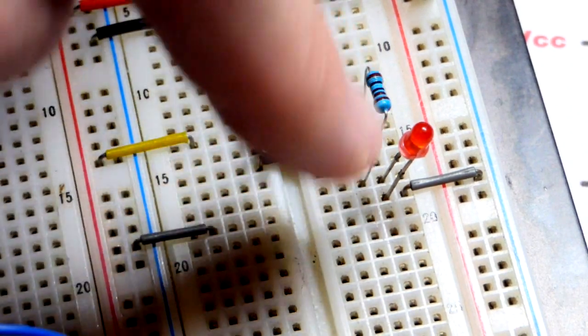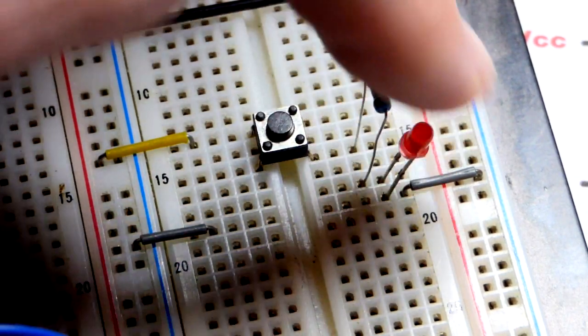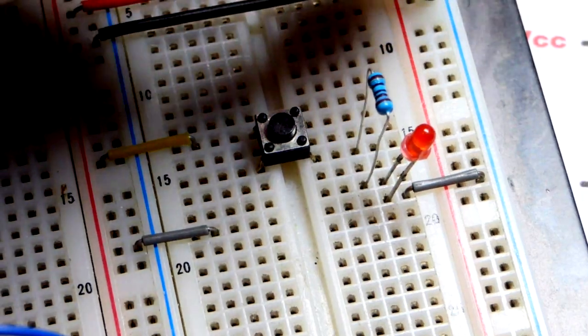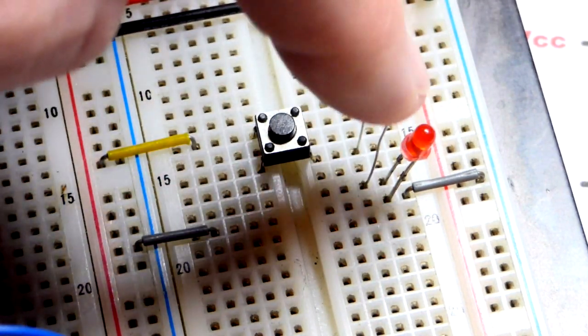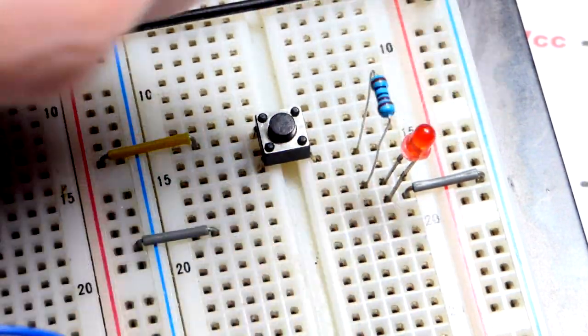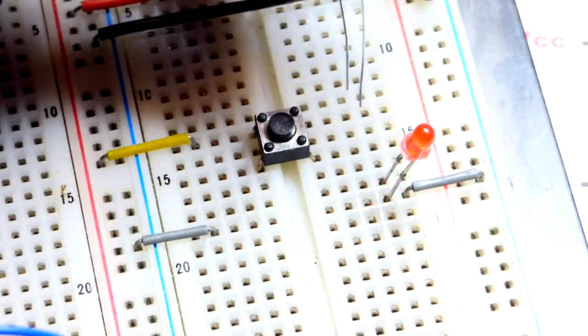We close the switch, it makes a connection there through the resistor and lights the LED. We're using a 5 volt power supply here and a 1000 ohm (1 kilohm) resistor to protect the LED.